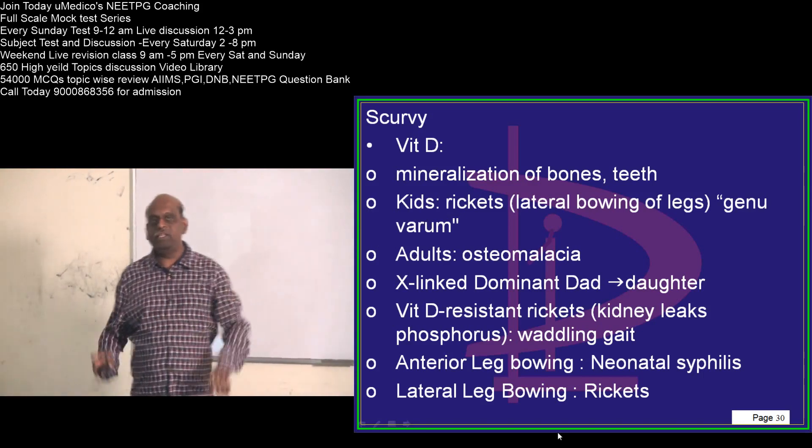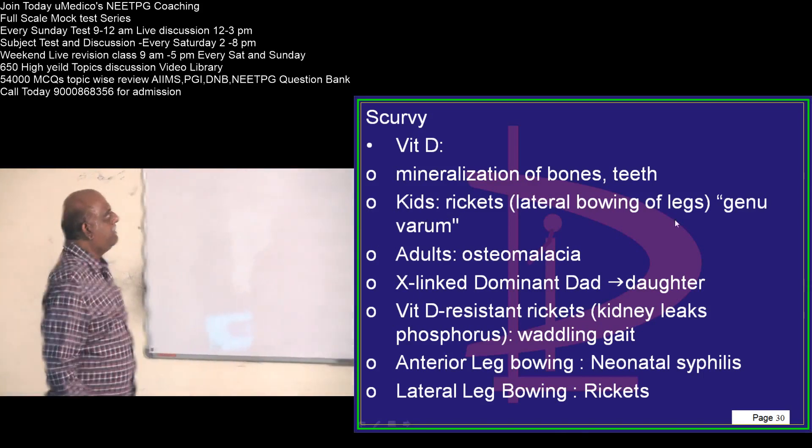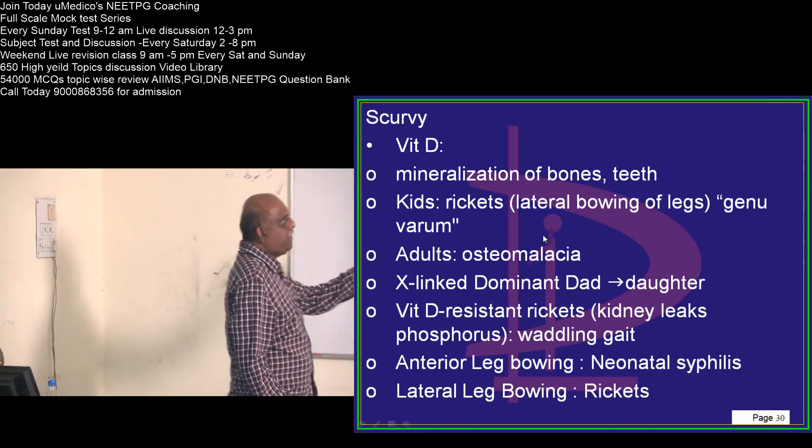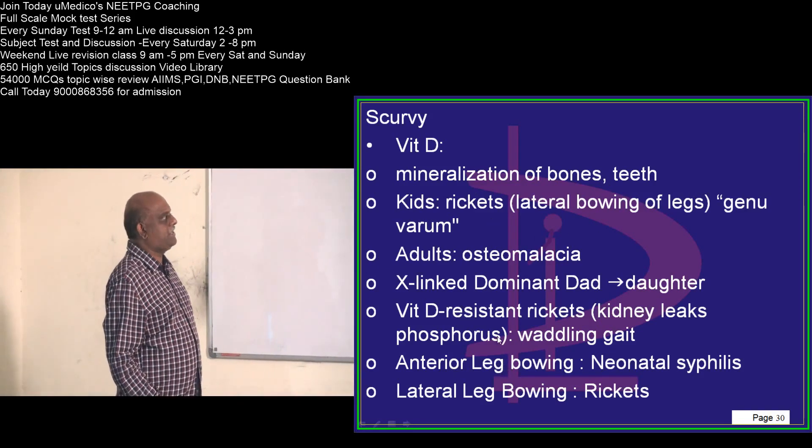Then what are the important things about vitamin D? It is for mineralization of the bones and the teeth, and it can lead to genu varum. In adults it leads to development of osteomalacia.